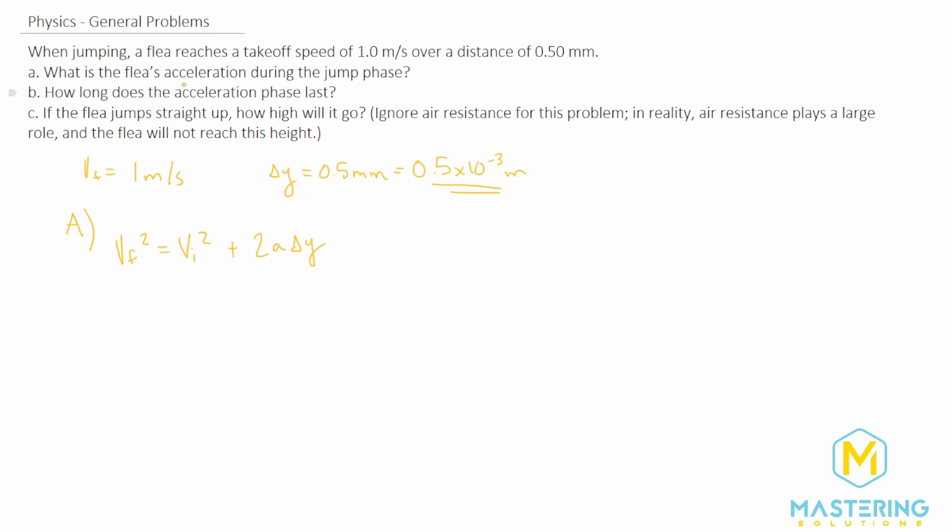We're trying to solve for acceleration, so let's isolate a. The initial velocity, however, is 0, so we can get rid of that, and then we'll divide both sides of the equation by 2 delta y. That will cancel.